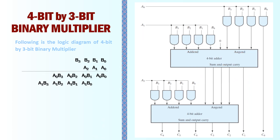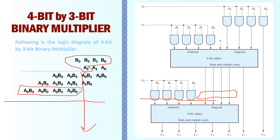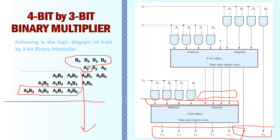After that, we form the partial product of A2 with multiplicand B: A2B0, A2B1, and so on up to A2B3. The four-bit sum result from the previous stage, along with these four bits, goes to another parallel binary adder. We obtain a 5-bit sum, and these five bits together with the previous C0 and C1 bits give the complete product of the 4-bit multiplicand and the 3-bit multiplier.